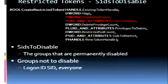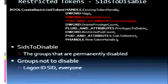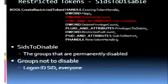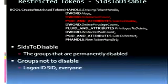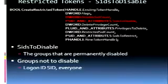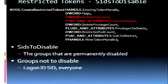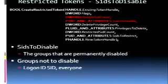There are really only about three groups that you really want to keep. You want to keep the logon ID SID because you need it for the windowing subsystem. You want to keep Everyone because if you don't have that, all sorts of things will go wrong. And you also want to keep Users, because Users have execute permissions on the executable files in program files and so on — you'll find you don't have enough rights to run very much code at all if you don't have Users enabled.